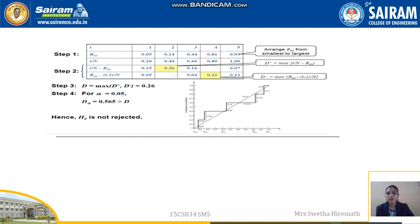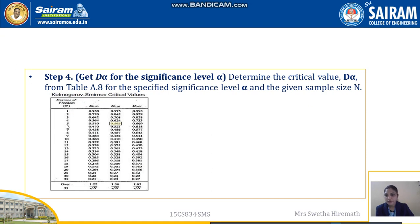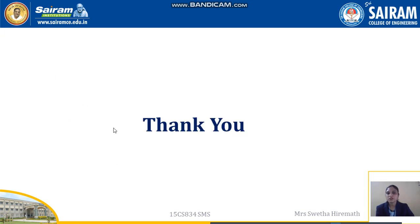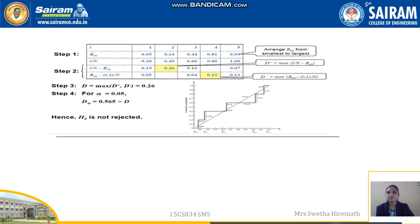We compare D = 0.26 with D-alpha. From the table, for 5 samples and alpha = 0.05, D-alpha = 0.565. Since D-alpha (0.565) is greater than D (0.26), we do not reject — we accept the random numbers, and these random numbers can be used in our simulations. This concludes the Kolmogorov-Smirnov test.